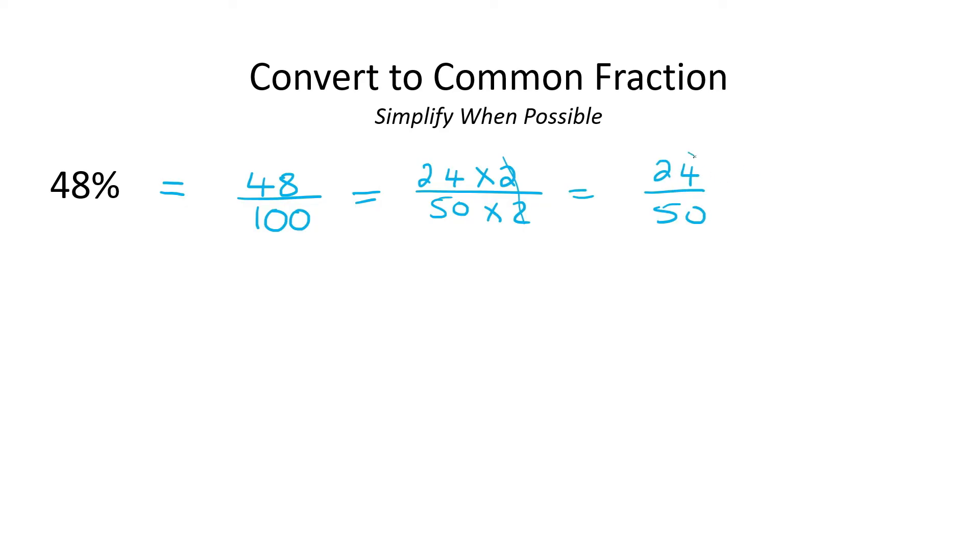And then we've got 24 over 50 now. Now I know that the number 2 can still go into both of these. So I can rewrite this as 12 multiplied by 2 and 25 multiplied by 2. So the 2s can cancel. And so I'm left with 12 over 25. And then there is no number that can go into both of those.